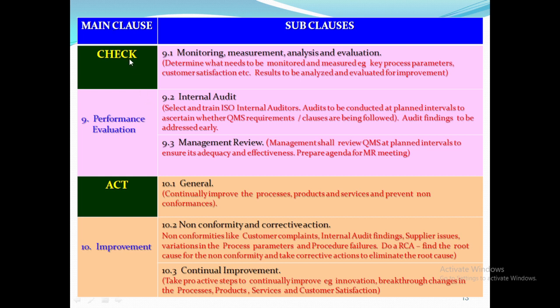Under Check, clause 9 is performance evaluation. Sub-clause 9.1 talks about how and what to be monitored, measured and analyzed — for example, key process parameters, product specification, customer satisfaction surveys — for improvement. Sub-clause 9.2 is about how to conduct ISO internal audits at planned intervals, select and train ISO internal auditors, and address audit findings with relevant clauses early. Sub-clause 9.3 is about conducting management review meetings as per MR agenda for discussing problems like long pending issues, legal compliance, customer satisfaction survey, resources required, and to assess the effectiveness of QMS in the organization.